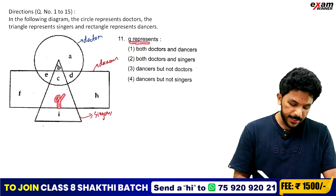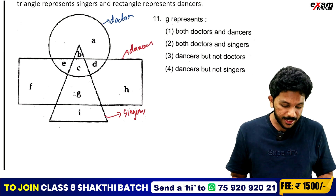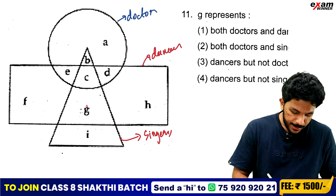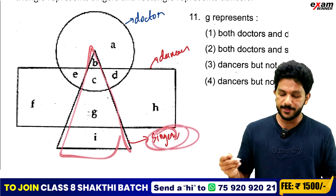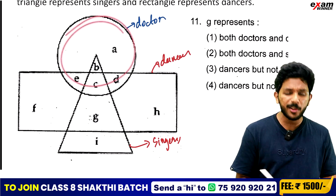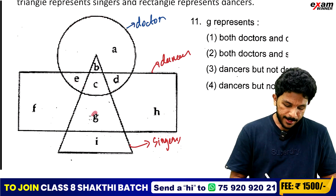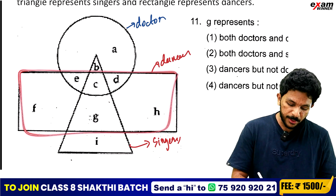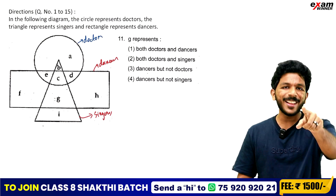For region G — what does it represent? It is a circle, so it is a doctor. If G is a triangle, then you will have a singer. That is not a circle — you will have a doctor, but not a doctor only. When G is a singer, the triangle is a dancer. You will have a dancer — a singer and dancer.